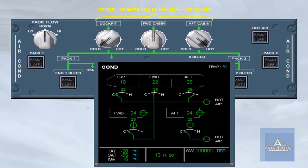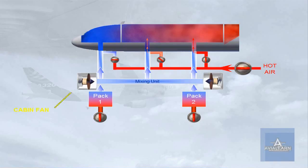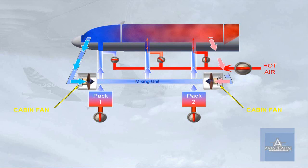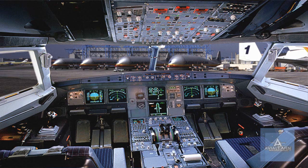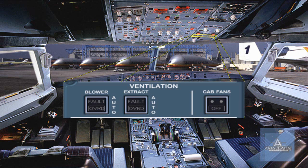The zone temperature selectors are used to adjust the required temperature for an associated zone. Two cabin fans are installed to recycle cabin air and therefore save fuel. These fans establish a recirculation flow of air from the three aircraft zones to the mixing unit. In normal operation, there is no ECAM indication related to the cabin fans. The cabin fans push button switch on the ventilation panel controls the cabin fans, and can be used to switch the fans off in response to an ECAM procedure.